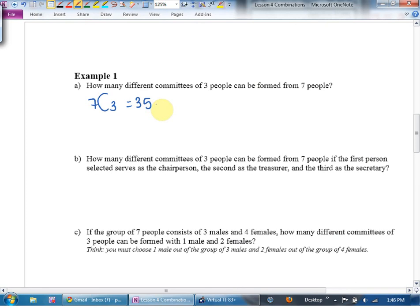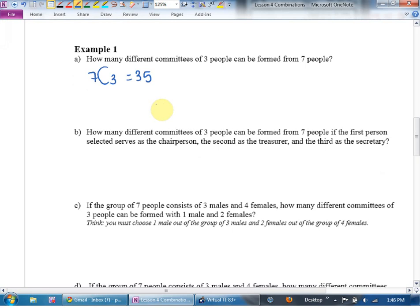Now, compare question A with question B. How many different committees of three people can be formed from seven people if the first person serves as the chairperson, the second as the treasurer, and the third as the secretary? Does this suggest that the order makes a difference? Yeah, if you're picked first, what are you? Chairperson. If you're picked second, what are you? Treasurer. If you're picked third, you're the secretary.